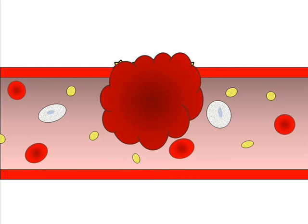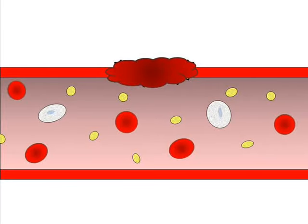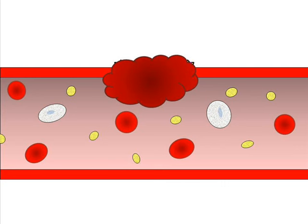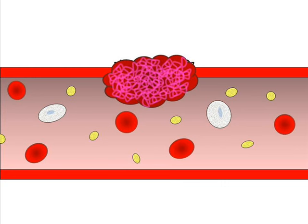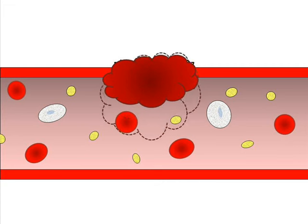Two groups of the body's naturally produced chemicals help to limit the size of the clot. The first group blocks coagulation. These substances are known as coagulation inhibitors or natural anticoagulants. When these chemicals interfere with the reactions among the clotting factors, fibrin formation is blocked, and no new fibrin strands are available to hold additional cells to the clot. In this way, clot growth is kept to a minimum.